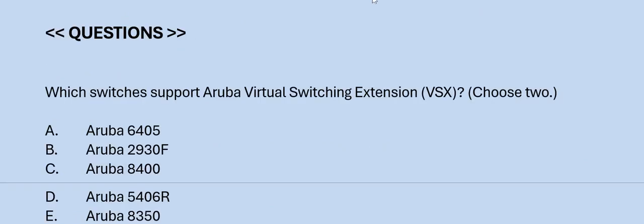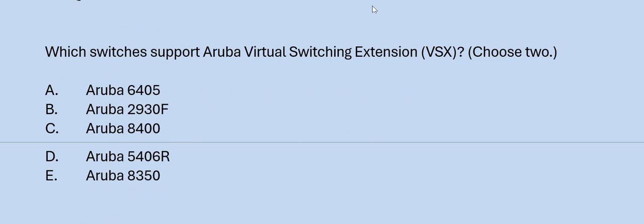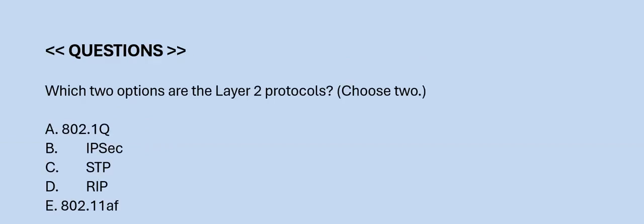Next question: Which switches support Aruba Virtual Switching Extension (VSX)? Choose two. Option A: Aruba 6405. Option B: Aruba 2930F. Option C: Aruba 8400. Option D: Aruba 5406R. Option E: Aruba 8350. The correct answers are Option A and C.